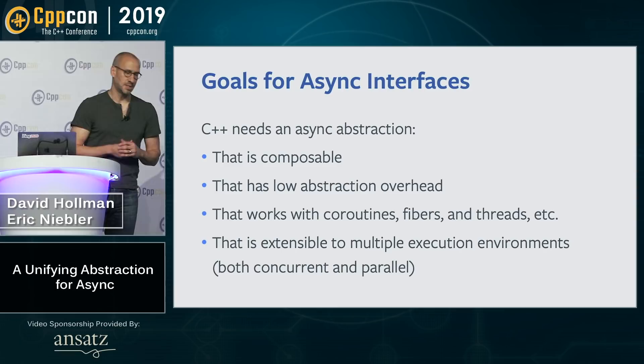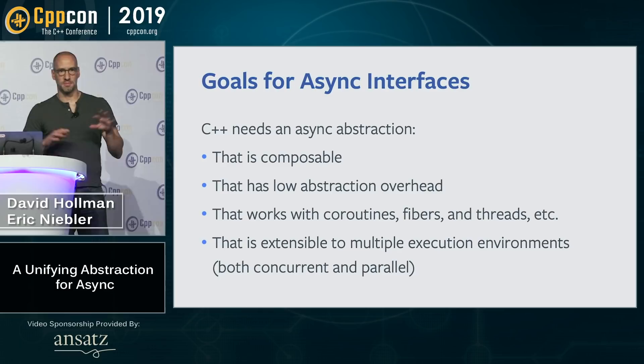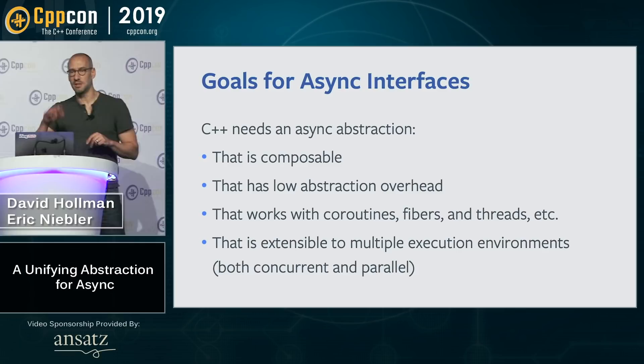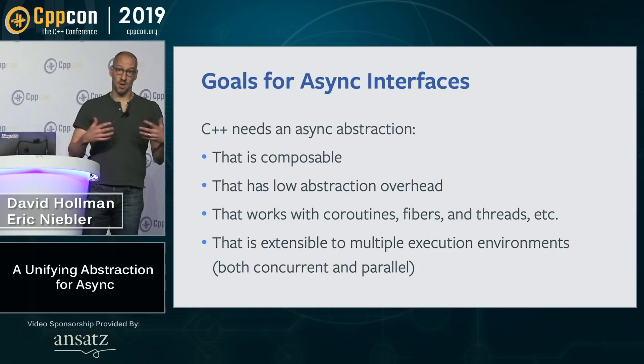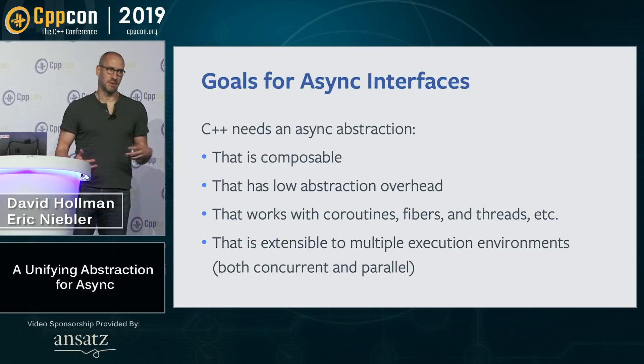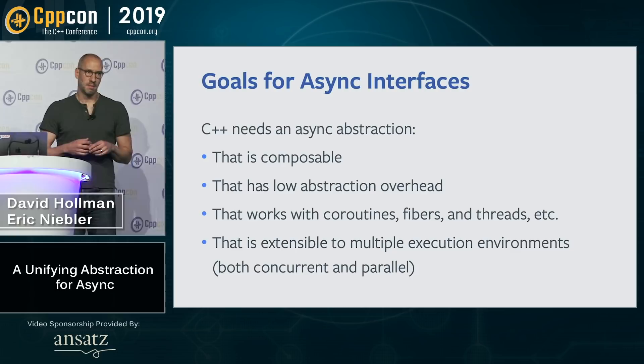What we're going to be talking about is async abstractions. You're all familiar with the STL, with the iterator abstraction and how it has unified the worlds of containers and algorithms. C++ is becoming increasingly an asynchronous language—asynchrony is becoming more and more important—and in C++23 we are hoping the standard library will have many more asynchronous capabilities. We really need to find that thing that is like an iterator, but for async: something that lets us write generic asynchronous algorithms.